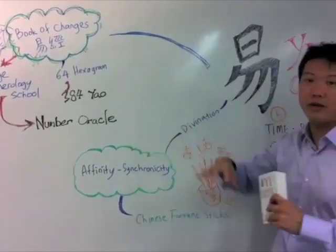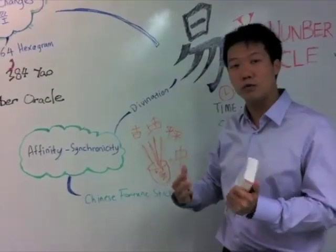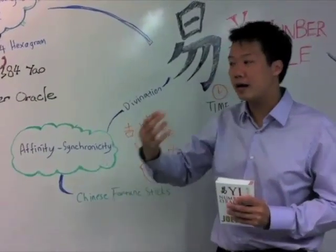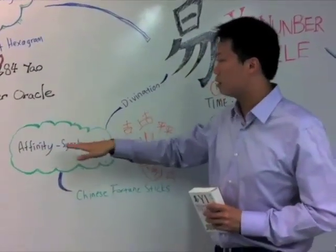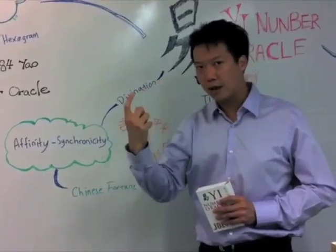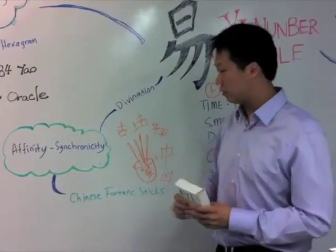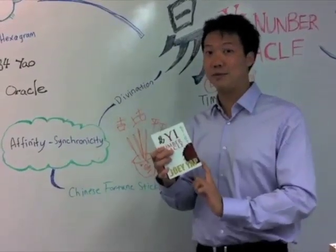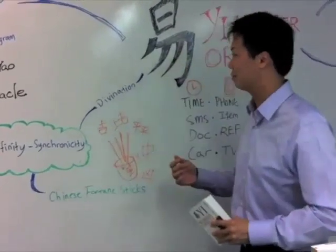If you have a spiritual following, or perhaps you want to explore the deeper realms of your subconscious mind and get answers from a higher knowledge, you can use the concept of affinity and synchronicity. When the question comes, you pick up the answer from a specific number, and with that number the explanation is here in this book. That's how the whole concept of the Yijing Number Oracle works.